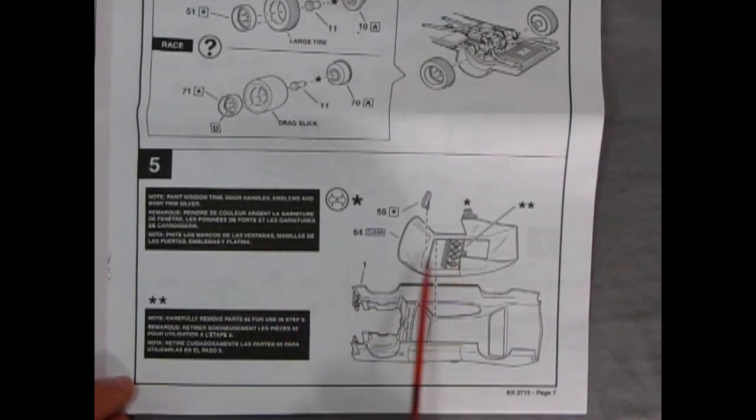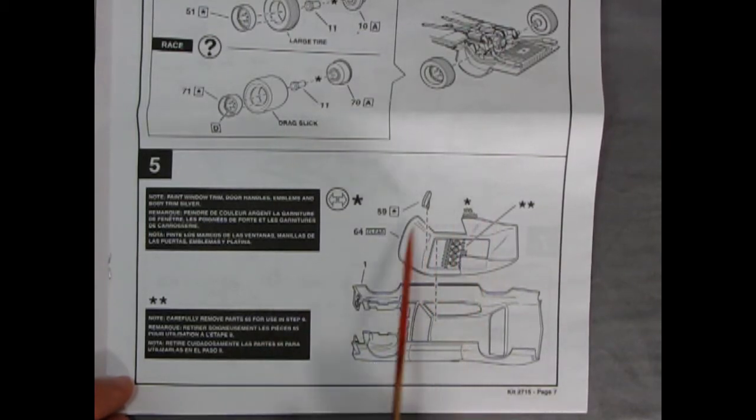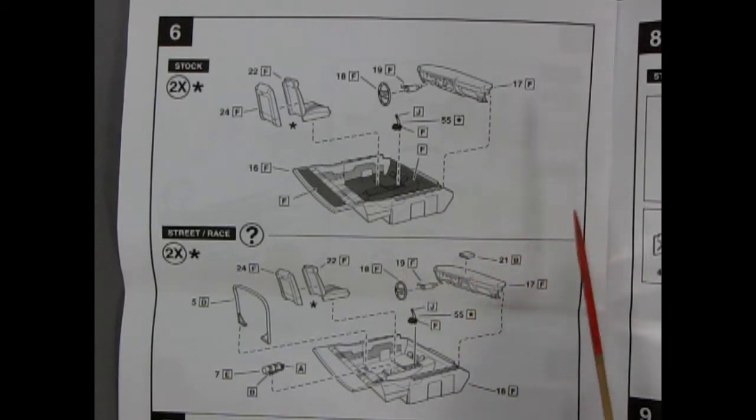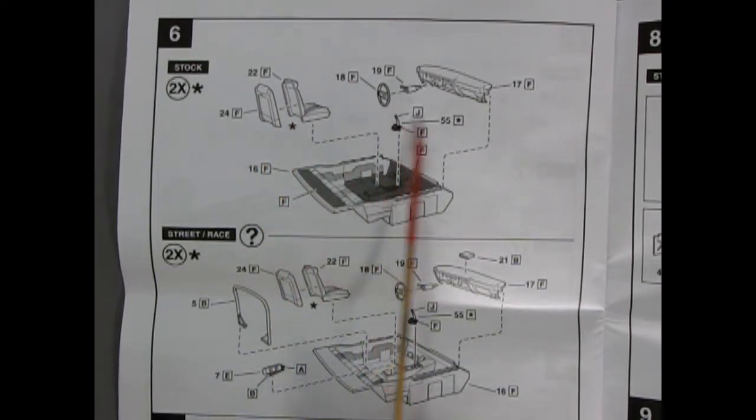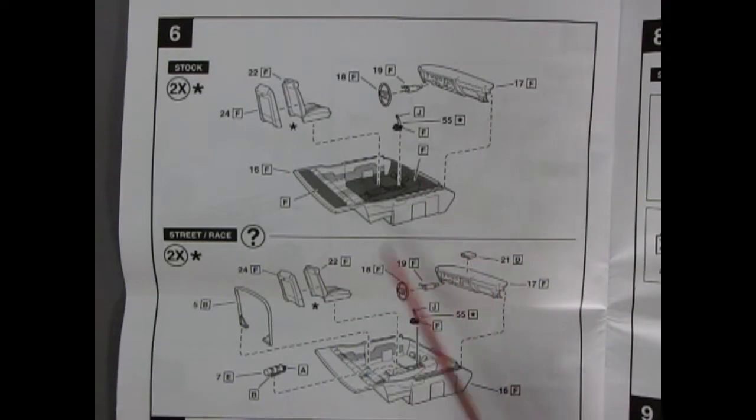In panel 5 we have our windows. This is no paint, window trim, door handles, emblems, and body trim silver. Carefully remove parts 65 for use in step 9. Next up we have our interiors, the stock version and our street and race. They are basically the same except you get the fire extinguisher, then the roll bar, and this little box up here. Front bucket seats. The interior is a tub variety. There's your dashboard, your steering column, your steering wheel, and your gear shift lever.